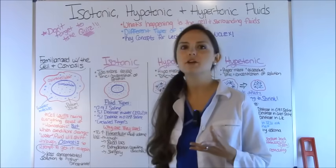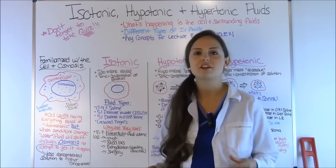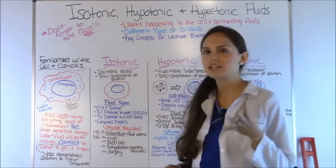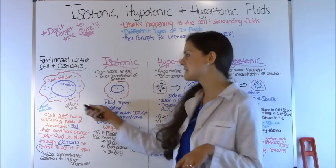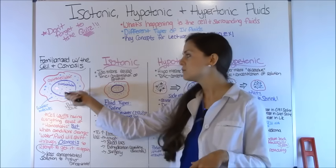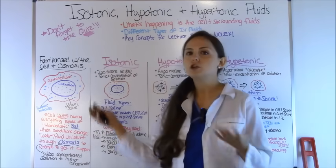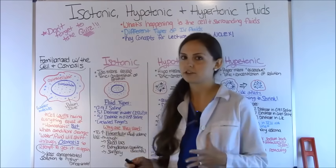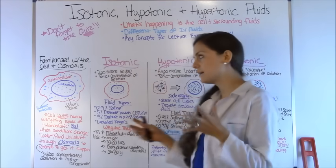First, let's familiarize ourselves with the cell and how osmosis works, because this is the foundation for understanding isotonic, hypotonic, and hypertonic solutions. Our body is made up of millions of these cells. Inside the cell you have the organelles and electrolytes — this is referred to as the intracellular part. Surrounding the cell is fluid also made up of electrolytes, referred to as extracellular. Intracellular is the inside, extracellular is the outside.